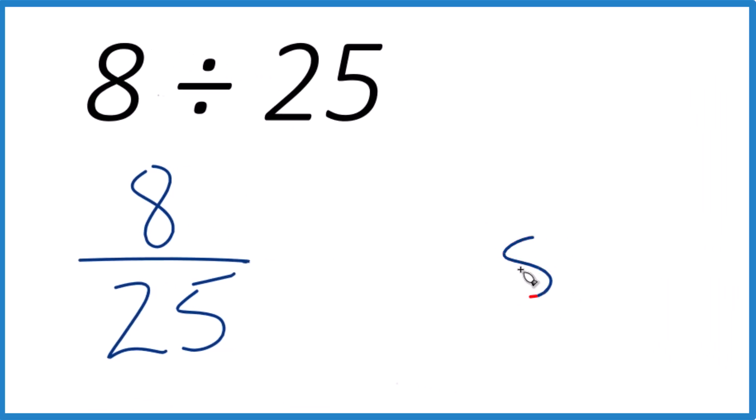So let's take 8 and then 25 here and do long division. 25 won't go into 8, but we could call this 8.0. It's still 8. We can put a decimal point up here.